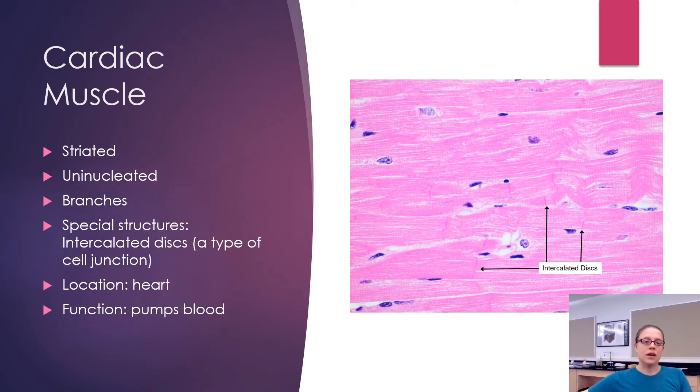Next we have cardiac muscle, which like skeletal muscle, is also striated. It also has the light and dark lines in it, although they're a little bit fainter here. One difference you'll see right off the bat is instead of having many nuclei, there are a lot less because cardiac cells are uninucleate.